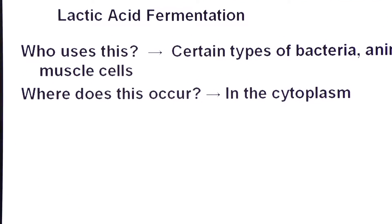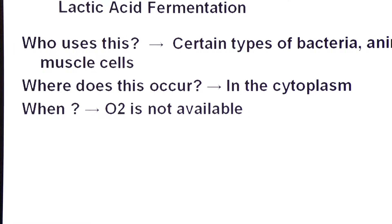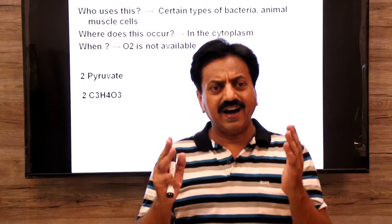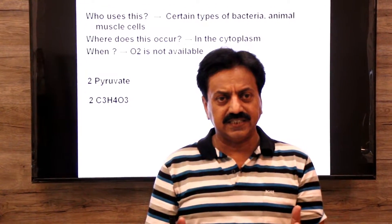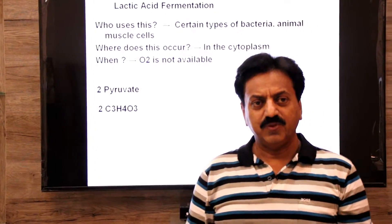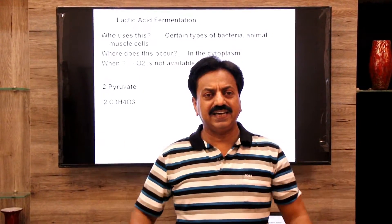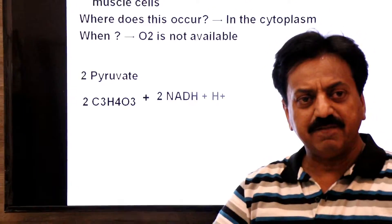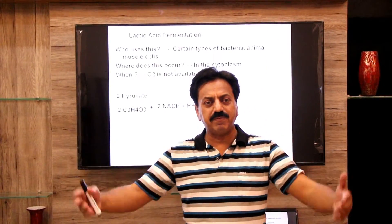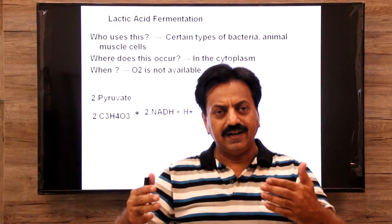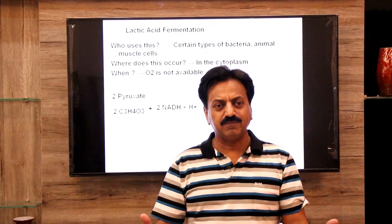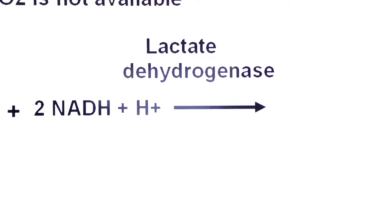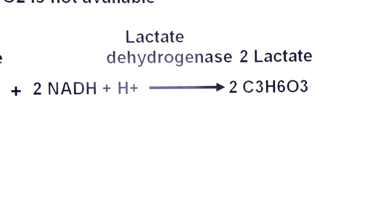Where does lactic acid fermentation occur? In the cytoplasm, and when oxygen is not available. Two pyruvate molecules with the formula C₃H₄O₃ are generated during glycolysis. If oxygen is not available, the NADH — which was given electrons and protons to carry to oxygen — reacts with pyruvate instead. NADH gives back its proton and electrons to pyruvate, and this process is catalyzed by lactate dehydrogenase.